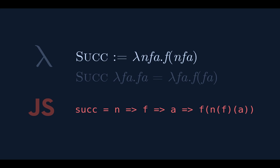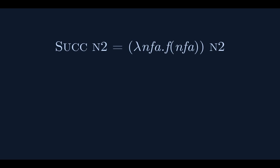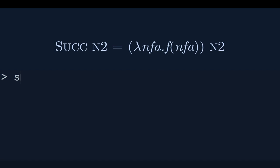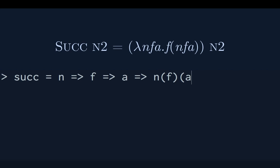So if the successor takes a church numeral n, it returns a new number function that takes f and a, does the original n function applications, then one more on top of that. The successor is: n f a → f (n f a) — one extra f. Let's try it out. Successor takes a church numeral and does n of f of a, but with an extra f in front for one extra application.